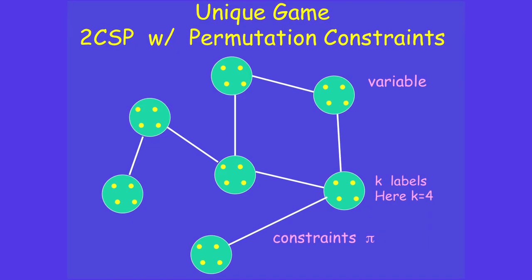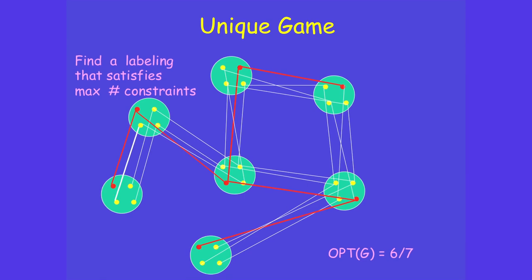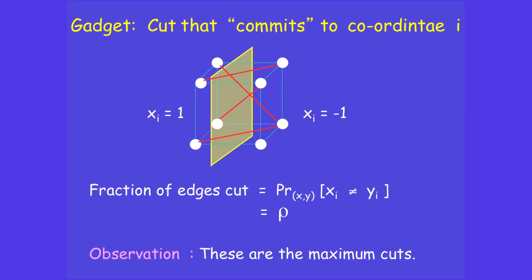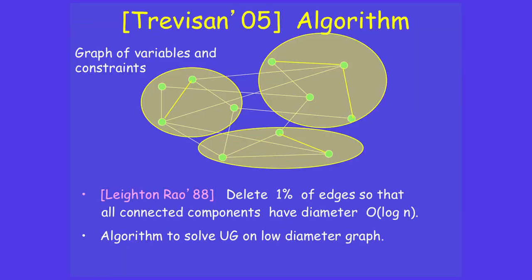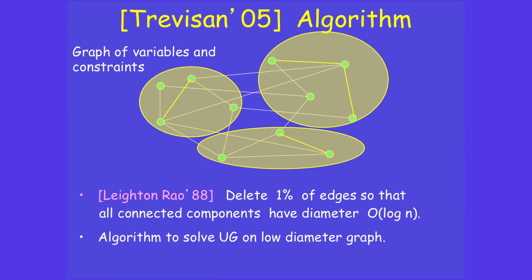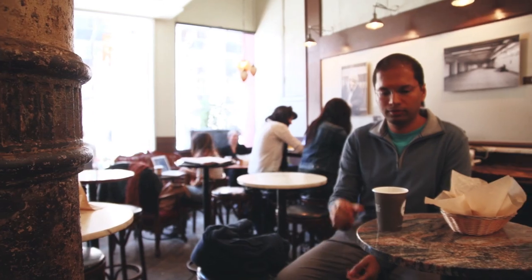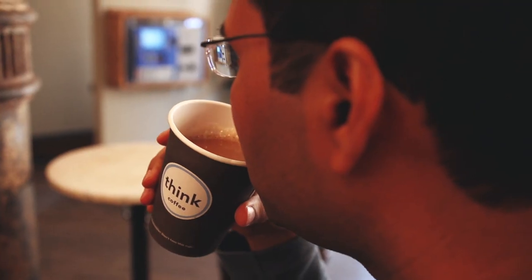One of the important contributions has been proposing the unique games conjecture and then developing research around this conjecture. I was vacationing in India, visiting family. This small idea came to me that if I use this unique games conjecture as a starting point of my field of research, it would really make the whole field easier and very consistent.